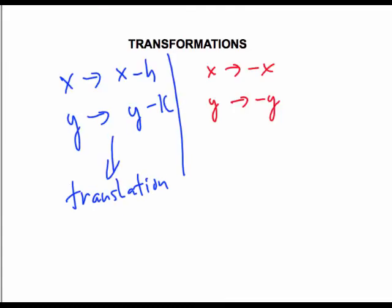And so coming back to where we started, replacing x with negative x reflects the graph across the y-axis. Replacing y with negative y reflects the graph across the x-axis. And doing both of them creates a rotation of 180 degrees about the origin.